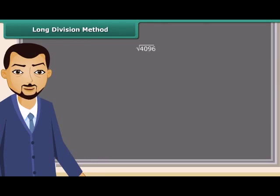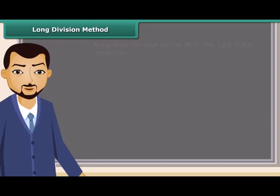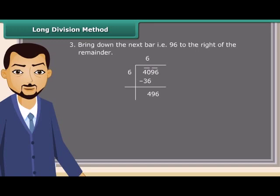For large numbers, the prime factorization method of finding square root becomes difficult. So, we use long division method. Let us look at the steps. First of all, draw lines over pairs of digits from right to left. Next, find the largest square number less than or equal to the first group. That is 40. Since 36 is less than 40, so we take 6 as the divisor and 6 as the quotient. Now, subtract 36 from 39. After that, bring down the next bar, that is 96, to the right of the remainder.